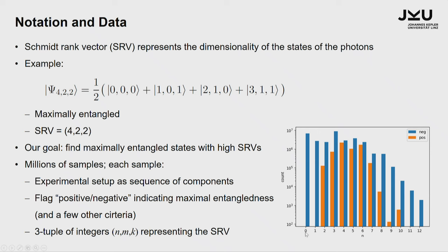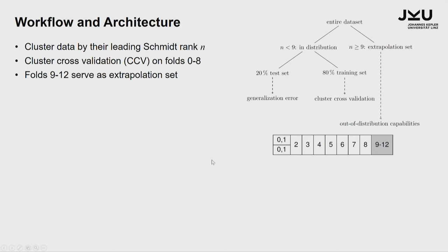The leading Schmidt rank N was from zero to 12. But you see that in the higher samples you don't find maximally entangled states so easily anymore. We clustered the data by the leading Schmidt rank and did cluster cross-validation on folds zero to eight. This means you train a network on the folds with Schmidt rank zero to seven, then test it on eight; then train on zero to six and eight and test on seven; and so on — always leaving one out and training on the others.